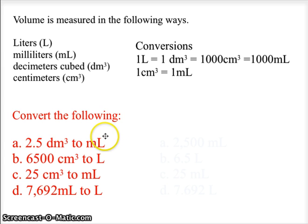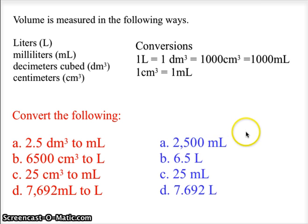On the PDF attached to this tutorial you have four sample problems converting various units of volume. Turn off the video, do the four problems, then come back and check your answers. Results: 2.5 decimeters cubed equals 2.5 liters, which equals 2,500 milliliters; 6,500 centimeters cubed equals 6.5 liters; 25 centimeters cubed equals 25 milliliters; and 7,692 milliliters equals 7.692 liters.